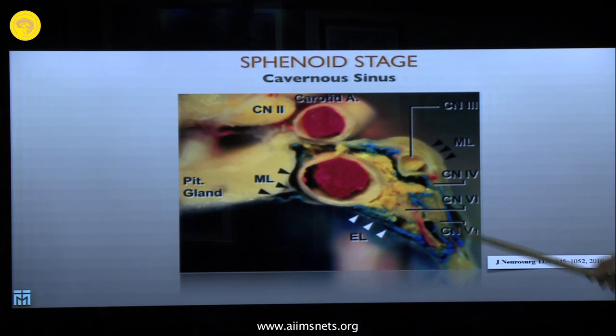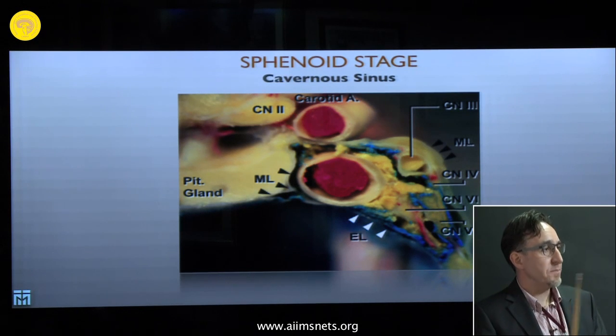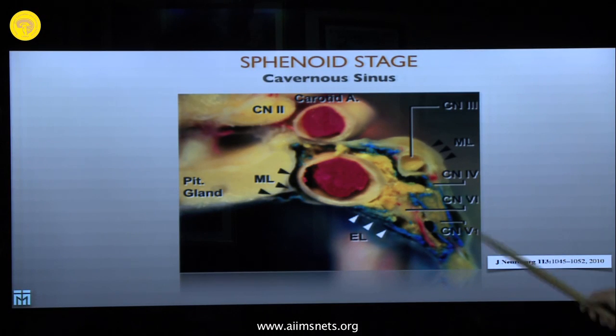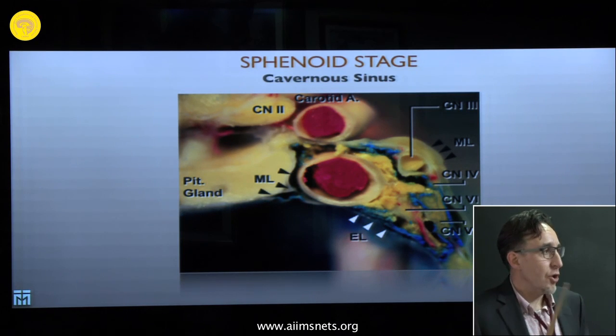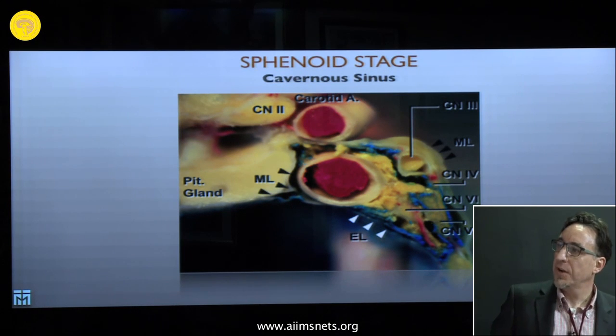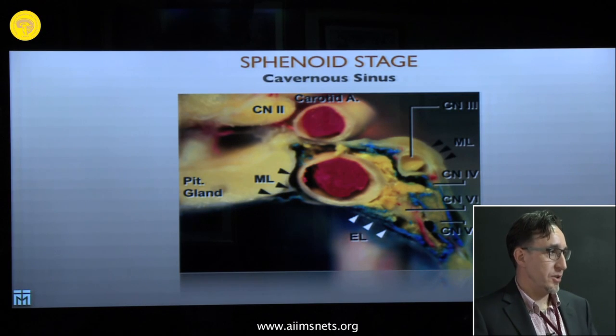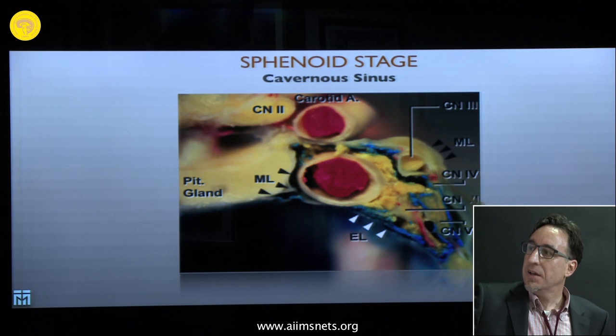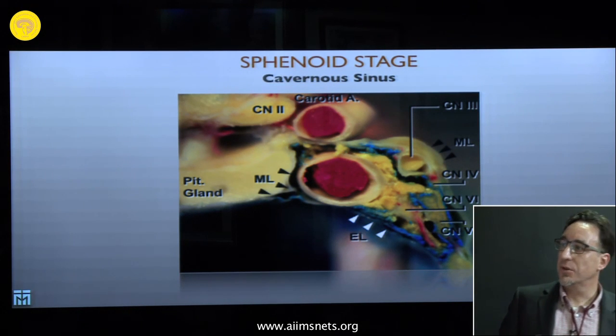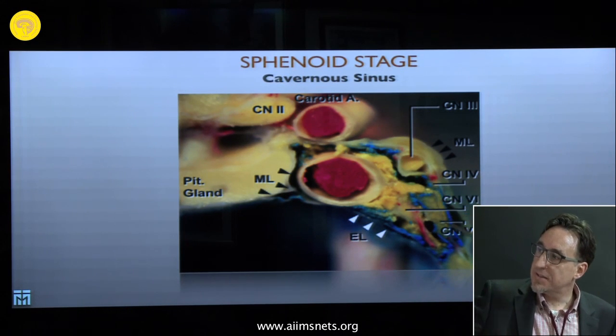The third nerve, fourth nerve, and first division of the trigeminal nerve are attached to the lateral wall of the cavernous sinus — not running within the wall but attached via an arachnoid layer that runs around these nerves. This arachnoid layer attaches them to the lateral wall. The only nerve without this arachnoid layer is the abducent nerve, which is therefore extradural, running freely in the cavernous sinus. Nerves lose their arachnoid layer when passing through a foramen. The abducent nerve passes through Dorello's canal, where it crosses the endosteal layer and loses its arachnoid sheath.